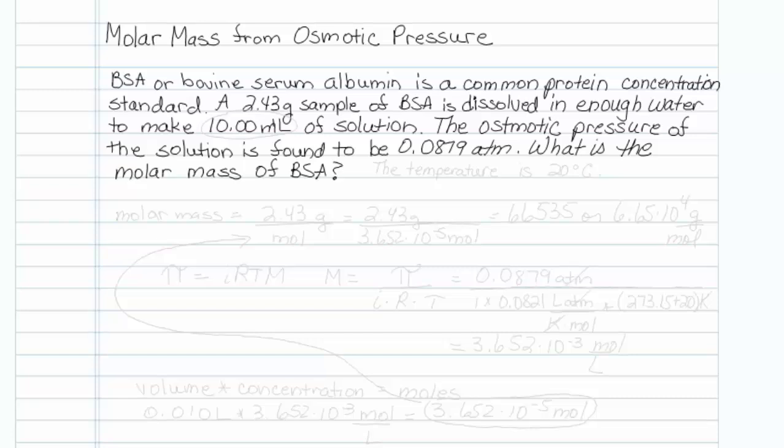This is how to get molar mass from osmotic pressure. BSA, or bovine serum albumin, is a common protein concentration standard. A 2.43 gram sample of BSA is dissolved in enough water to make 10.00 mL of solution. The osmotic pressure of the solution is found to be 0.0879 atmospheres. What is the molar mass of BSA?